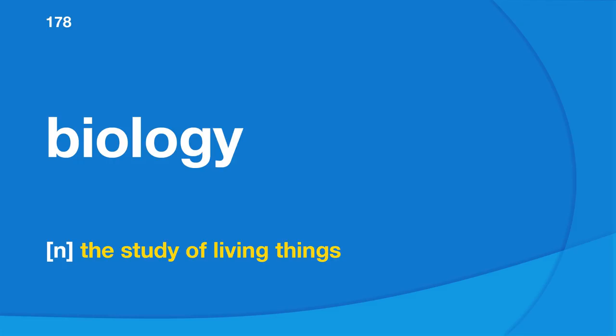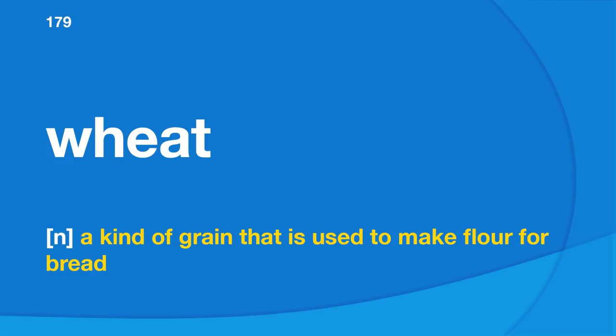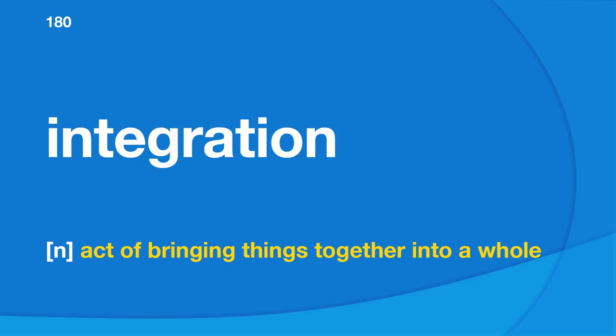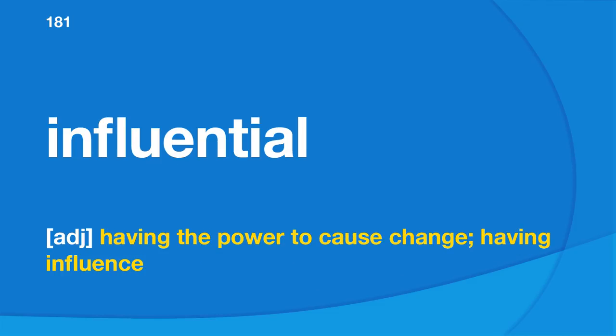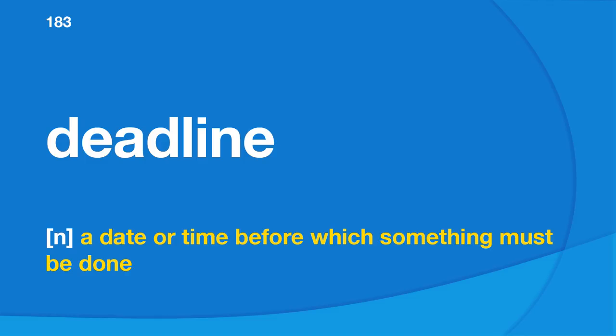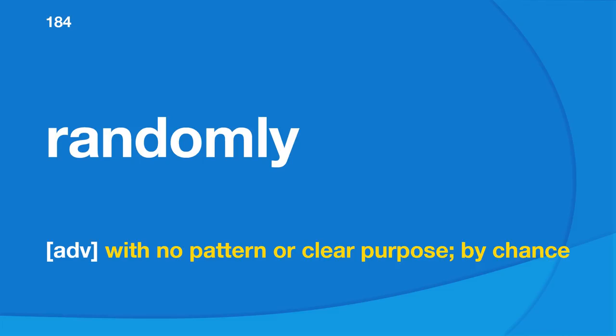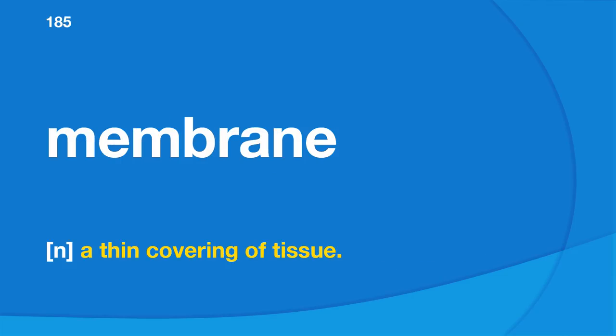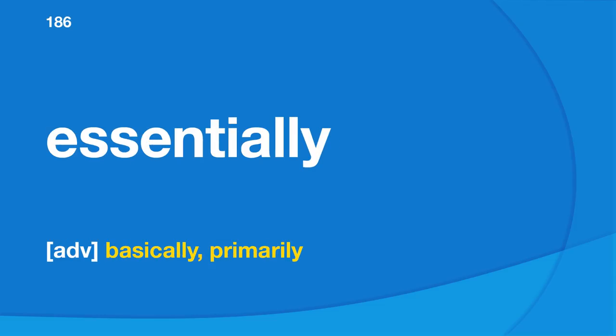Wheat: a kind of grain that is used to make flour for bread. Integration: act of bringing things together into a whole. Influential: having the power to cause change, having influence. Composer: a music writer. Deadline: a date or time before which something must be done. Randomly: with no pattern or clear purpose, by chance. Membrane: a thin covering of tissue. Essentially: basically, primarily.